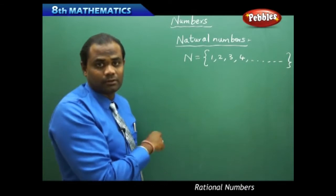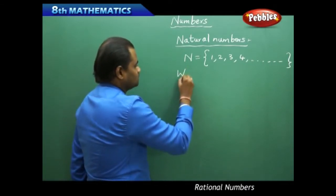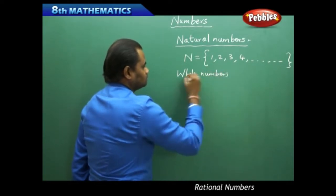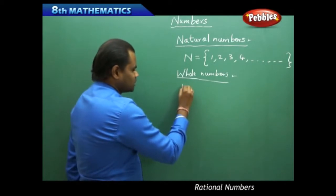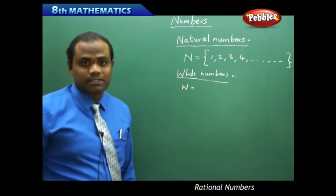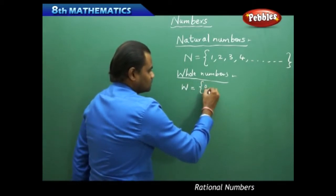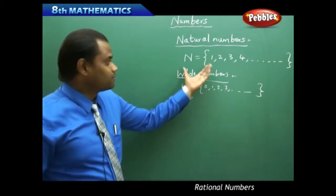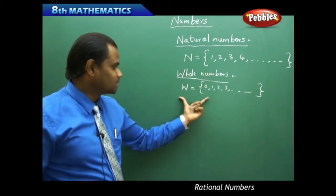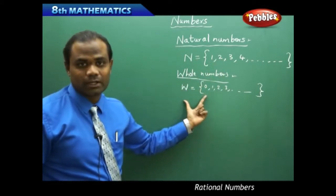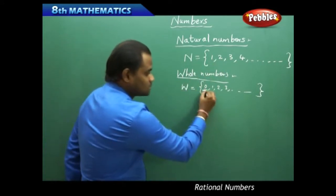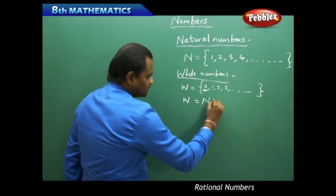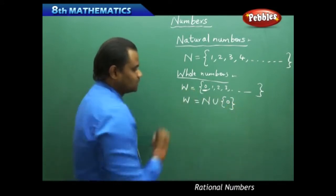The next set of numbers are the whole numbers, generally denoted by W. They start with 0 and end at infinity. The difference between natural numbers and whole numbers is that whole numbers are the set of natural numbers with one additional element, 0. So whole numbers can be mathematically defined as all natural numbers including the element 0.